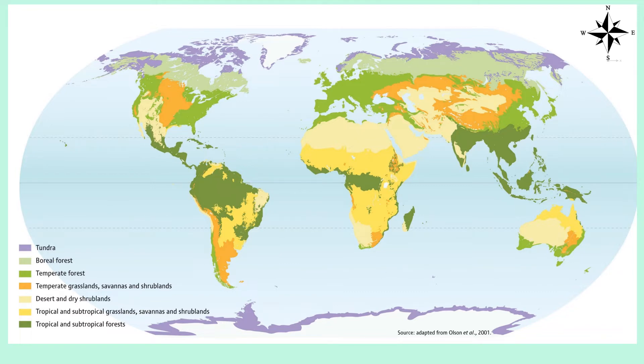There's a range of biomes across the world. We've got polar regions at the north and south poles. Below them we've got the tundra. Below the tundra we've got the boreal forest, sometimes called the taiga forest. Then we've got temperate forests — the UK for example, also called deciduous woodland. Then grasslands: temperate grasslands and tropical grasslands or savannas. And deserts and tropical rainforests on the equator.